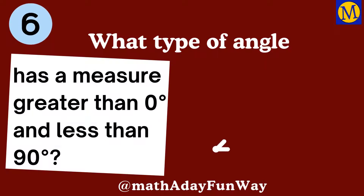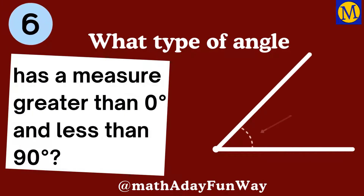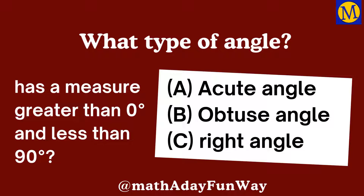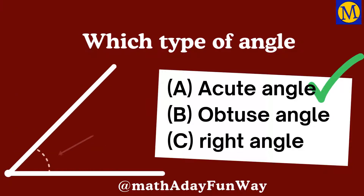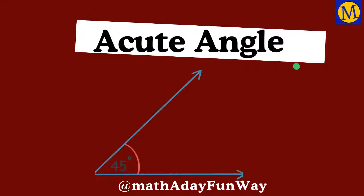Question six. What type of angle has a measure greater than zero degrees and less than 90 degrees? Acute angle. Absolutely correct.